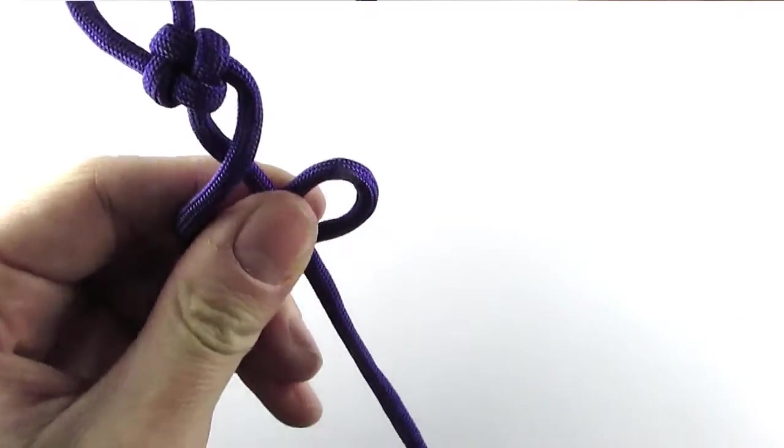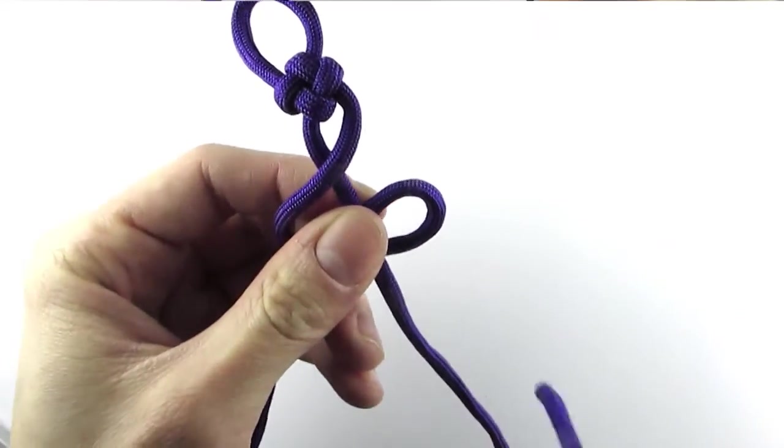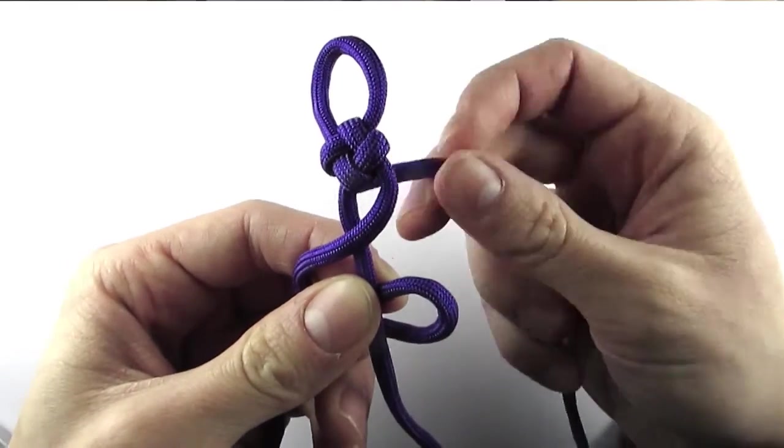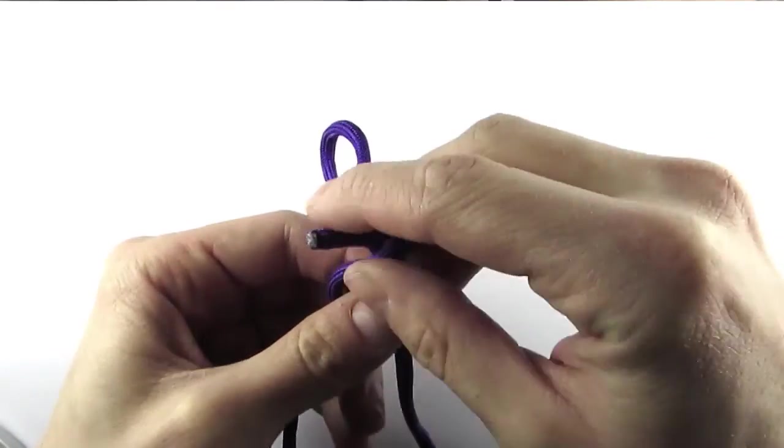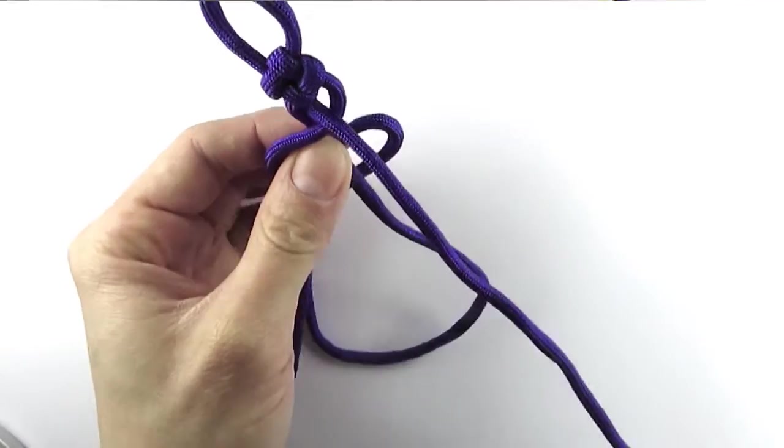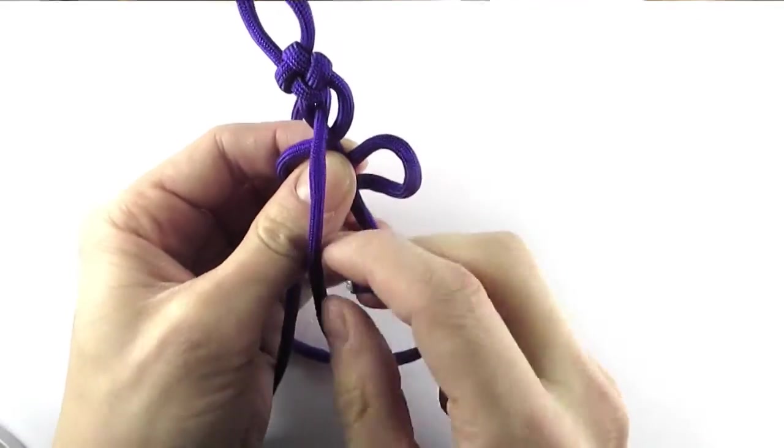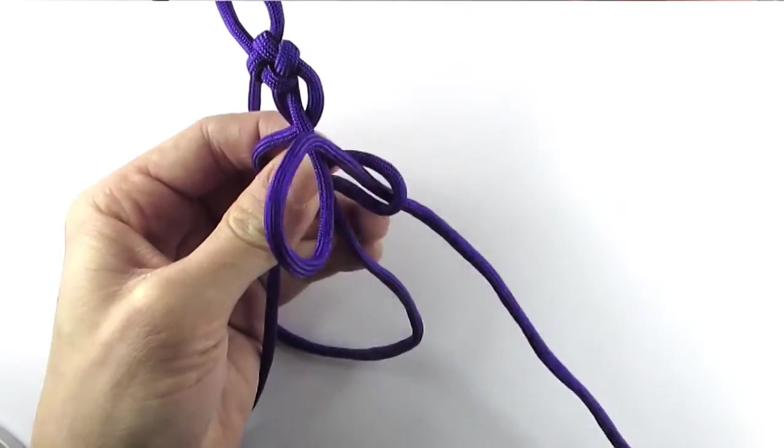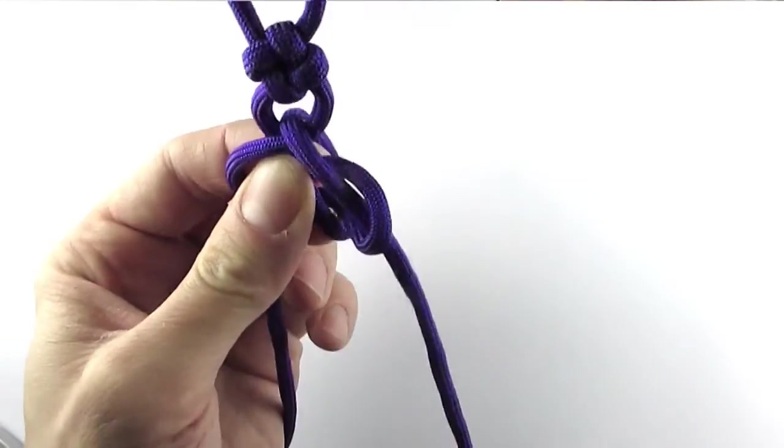So it's up, down, down. And then take the right cord, feed it through the bottom of the top loop and then through the top of the bottom loop. Like this, and we have another cross knot ready.